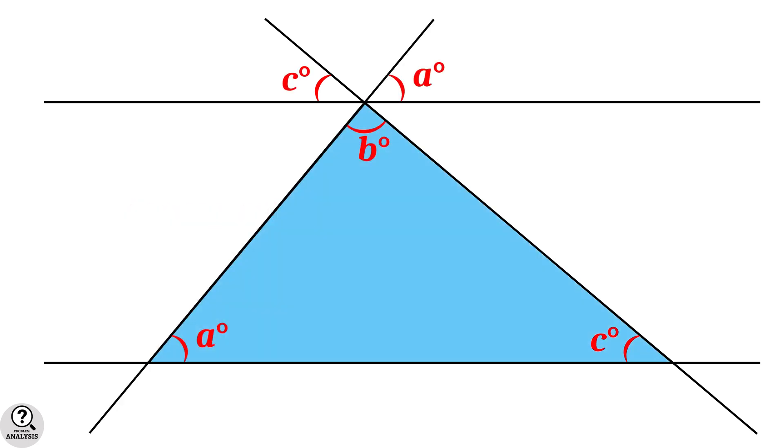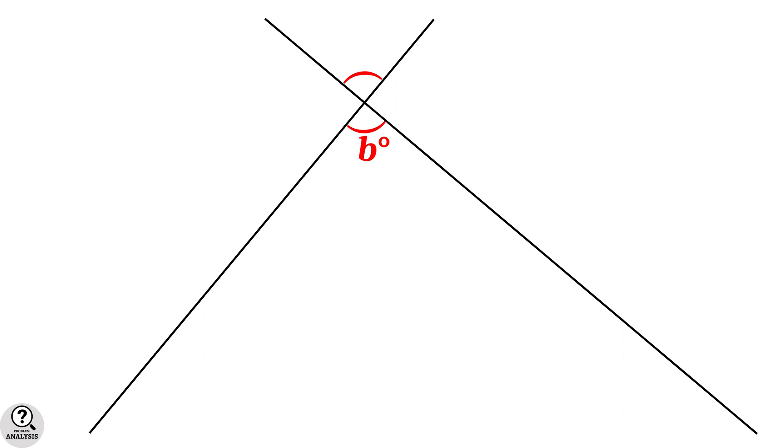Now again coming back to the figure, consider the top middle angle and observe these two crossing lines. Then we can see that these two angles are opposite angles and hence they are equal.